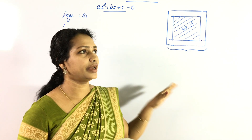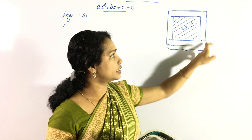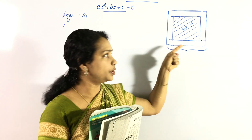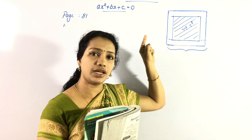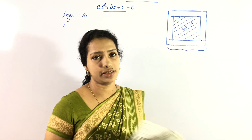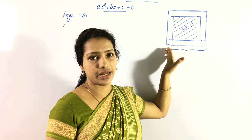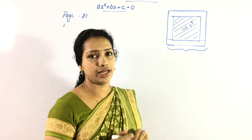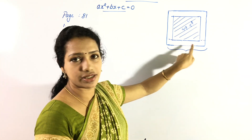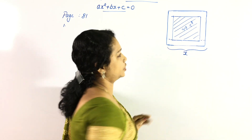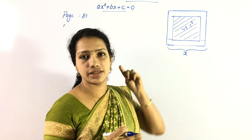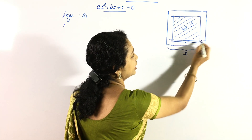Let's talk about the square. A square has equal sides. The original square has a side which we will call X. When each side is reduced by 2 meters, the new side becomes X-2.